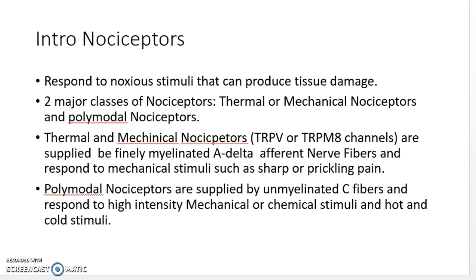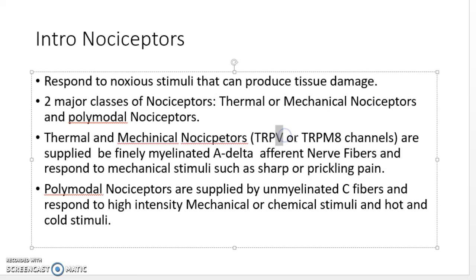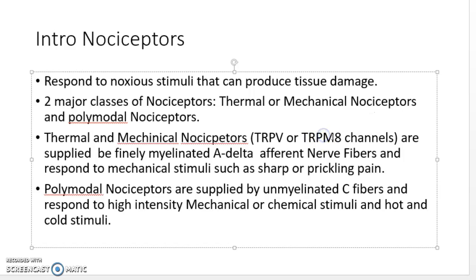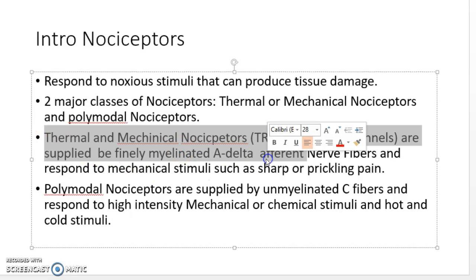Another form of the thermal and mechanical nociceptors is the transient receptor potential channel. This includes the transient receptor potential vanilloid (TRPV) for heat and spice activity, and the transient receptor potential melastatin (TRPM) channels for cold activity. Vanilloid receptors are activated by consuming spices.